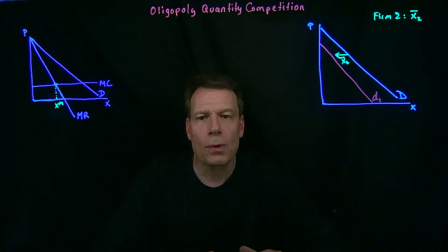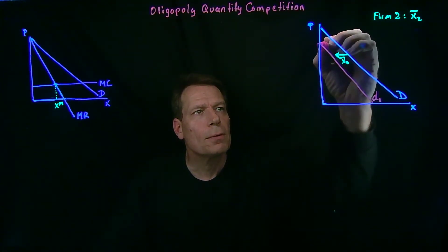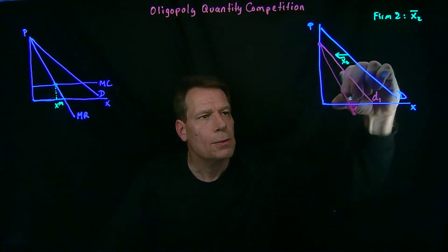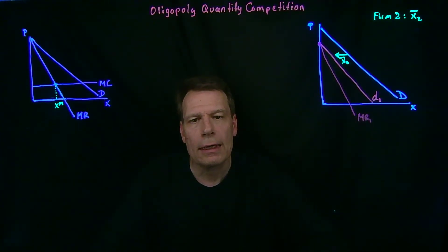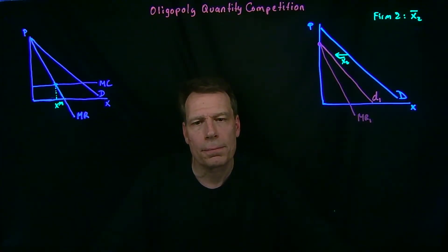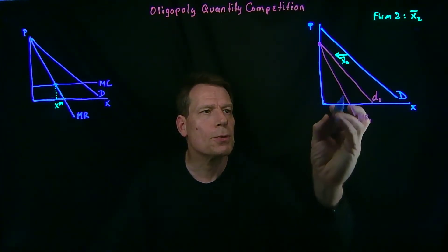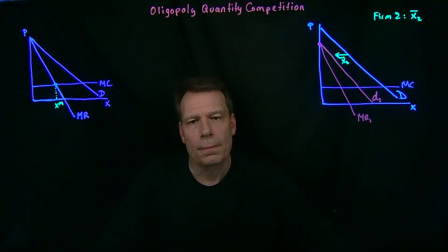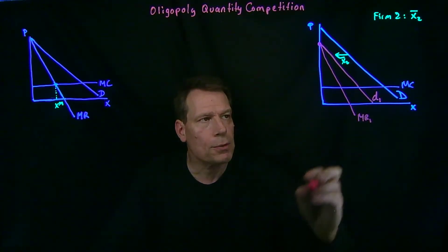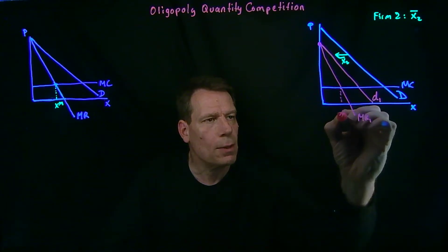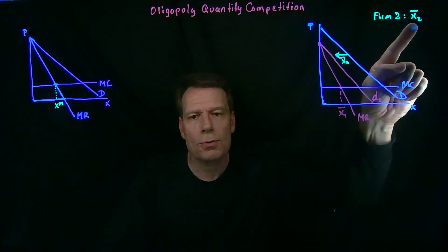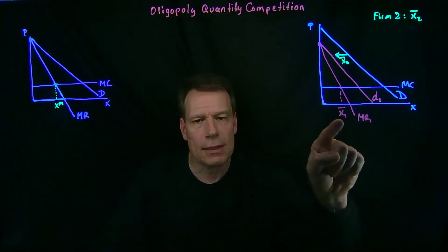Now once firm one knows what its demand curve is, it knows what its marginal revenue curve is. The marginal revenue always starts at the same intercept as the demand curve but has twice the slope. So we would now have a marginal revenue curve for firm one, given that firm two is producing this quantity. We just need the marginal cost, and we'll continue to assume that marginal cost is constant. The firm is going to produce where marginal revenue equals marginal cost — let's call that quantity x1_bar. We would now say that firm one's best response to firm two producing x2_bar is to produce x1_bar.